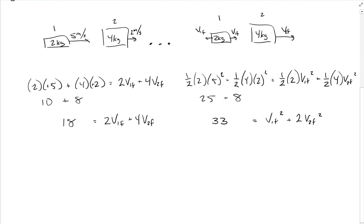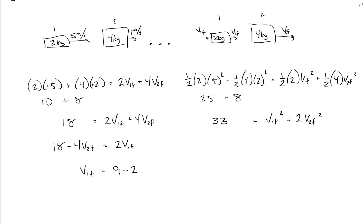Now it's an algebra exercise. There are a lot of ways to do this — we could solve for a variable and do substitution, which is the way I'll go. The easiest thing is to solve the momentum equation for V1 final and substitute it into the energy equation. Isolating V1 final: subtract four V2 final, so eighteen minus four V2 final equals two V1 final. Divide everything by two, and we get V1 final equals nine minus two V2 final.